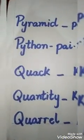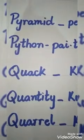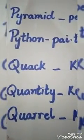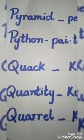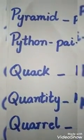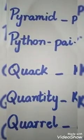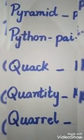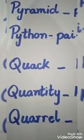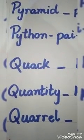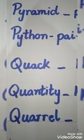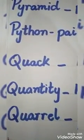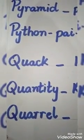Our next word is 'Puppet': P-U-P-P-E-T, Puppet. Our next word is 'Pyramid': P-Y-R-A-M-I-D, Pyramid. Next word is 'Python': P-Y-T-H-O-N, Python. Next word is 'Quack': Q-U-A-C-K, Quack. Next word is 'Quantity': Q-U-A-N-T-I-T-Y, Quantity. Last word is 'Quarrel': Q-U-A-R-R-E-L, Quarrel.